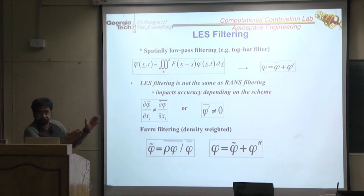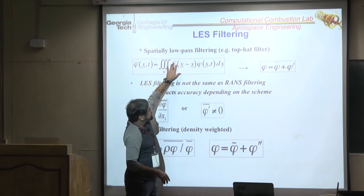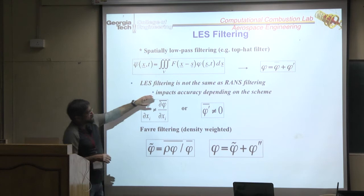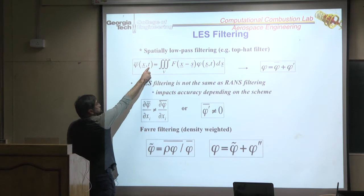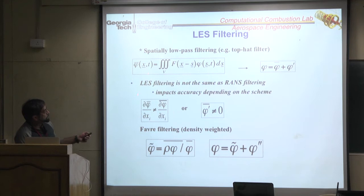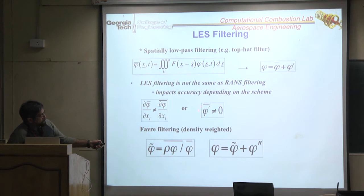Remember the DNS solution doesn't exist. You are assuming something existed finer than the grid that you are running in LES, and you are filtering it using some filter function such that an instantaneous signal might be broken up into some solution bar quantity which is actually unsteady and also space dependent. So unlike RANS filtering—which has no time dependence and is only space dependent—this is both unsteady and space. Even though notationally it looks the same, the meanings are different.